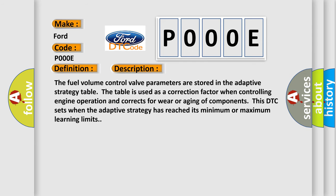The fuel volume control valve parameters are stored in the adaptive strategy table. The table is used as a correction factor when controlling engine operation and corrects for wear or aging of components. This DTC sets when the adaptive strategy has reached its minimum or maximum learning limits.